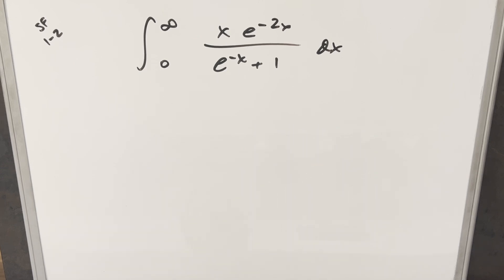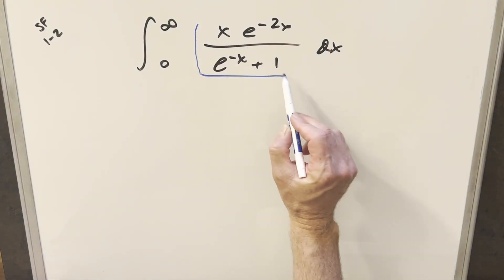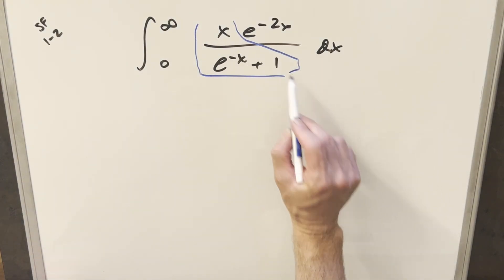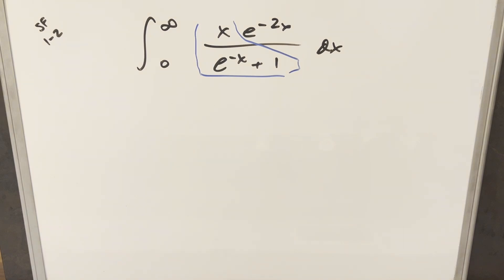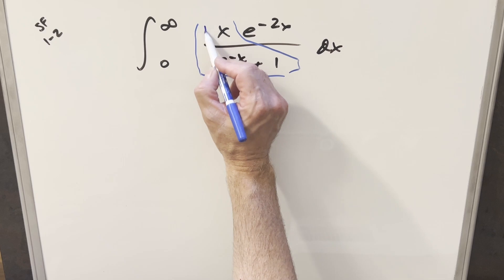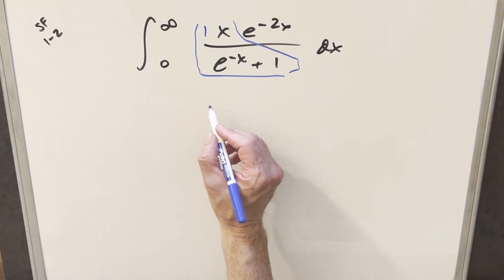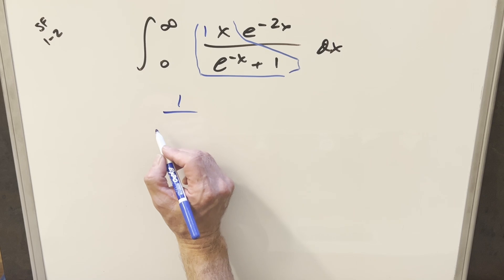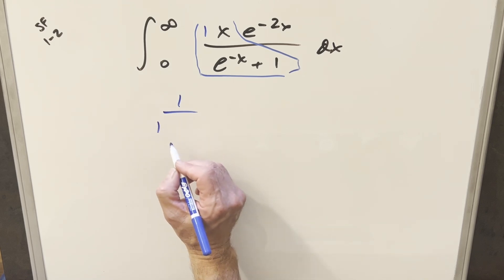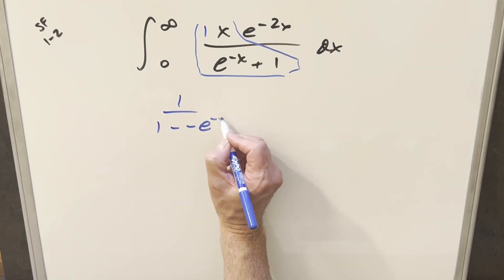This is actually really similar to a problem I did not too long ago from the UK Integration Bee — I think that one was just this part here without the e^(−2x), or something really similar to that. What I want to do is use basically the same method: kind of just create a 1 there and focus on this denominator. I can rearrange it and write this as 1 over 1 minus (−e^(−x)).